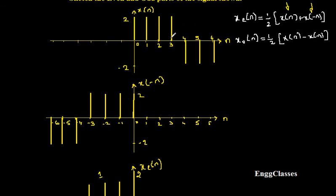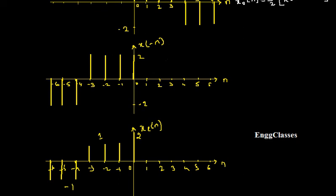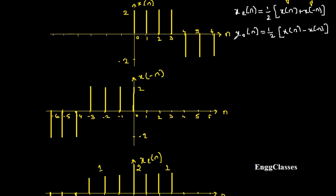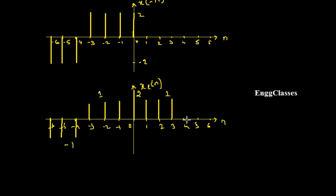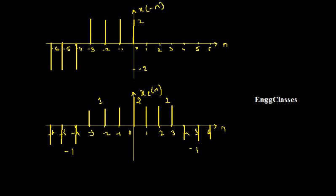At position 1, x(n) has amplitude 2 and x(-n) has nothing — 2 plus 0 gives 2, divided by 2 gives 1. Similarly at positions 2 and 3 I get amplitude 1. At positions 4, 5, and 6, x(n) has amplitude minus 2 and x(-n) has nothing — minus 2 plus 0 gives minus 2, divided by 2 gives minus 1. So this is how the even part x_e(n) of the signal finally looks like.